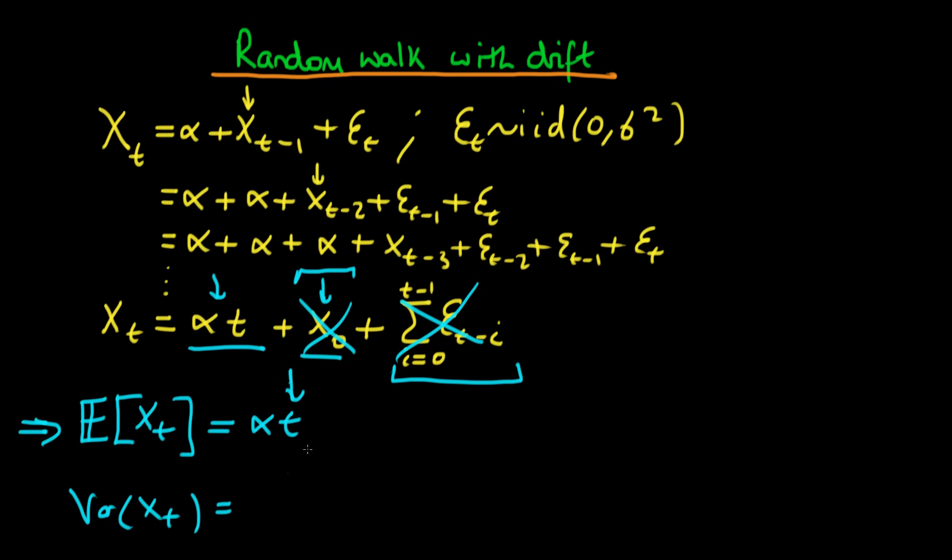the only term which contributes variance is actually this term which I've crossed out here which is this sum of the error term here so the variance of xt is equal to the sum from i equals 0 to t minus 1 times the variance of et minus i and the reason I haven't got any cross terms in here is because of the fact that our errors are independent of one another